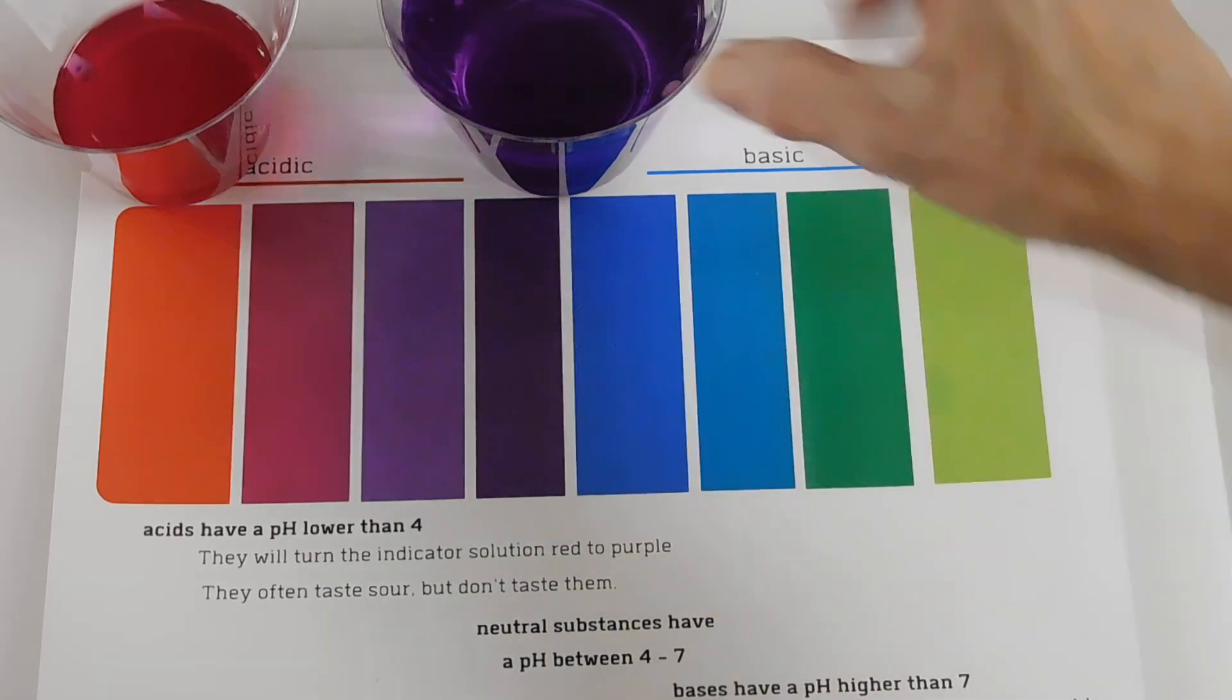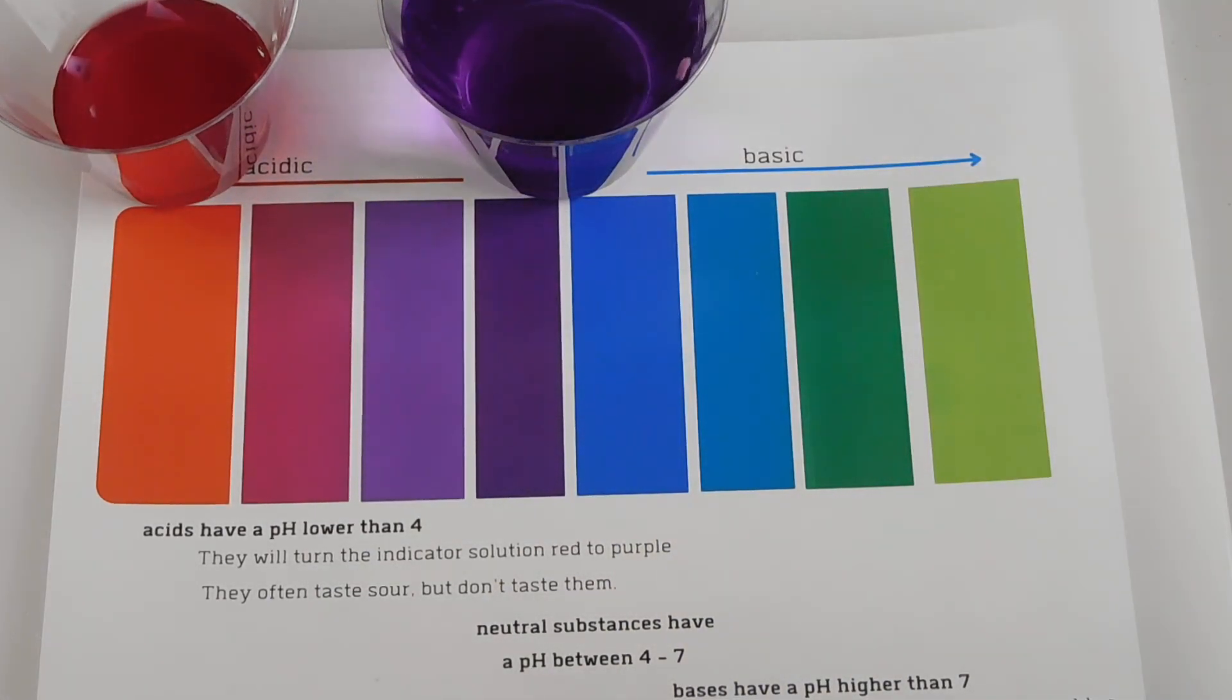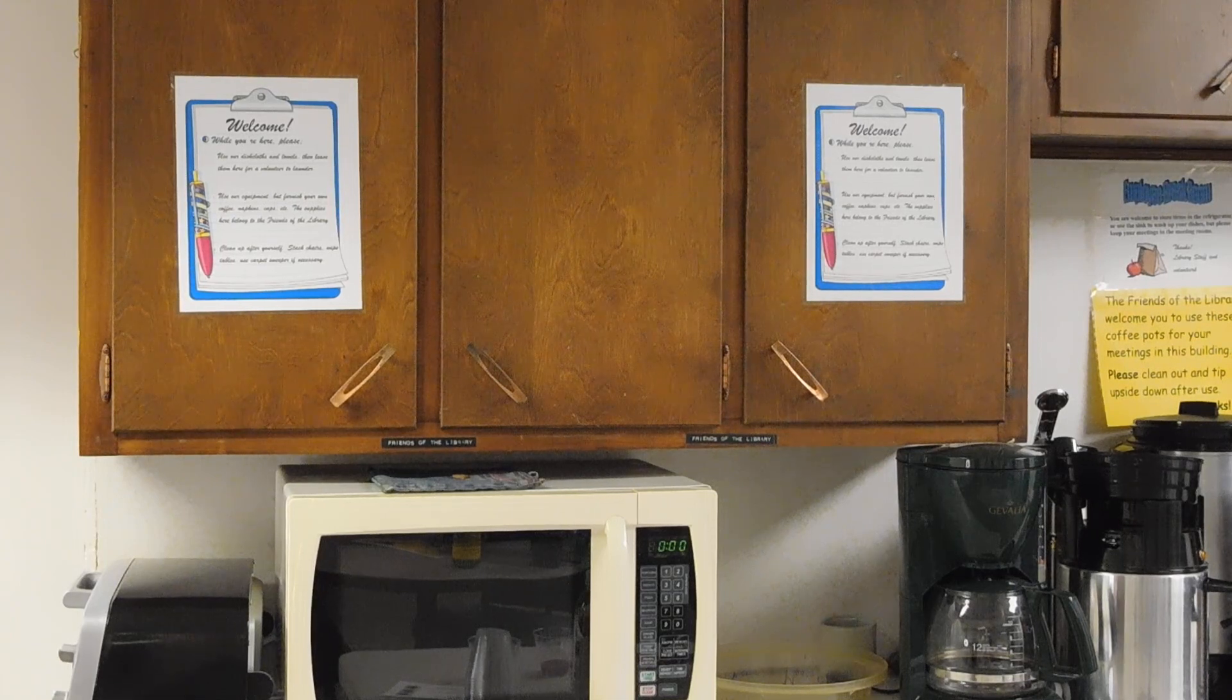So we use the base to neutralize the acid. So with the pH we had something that was an acid, we added something that was a base, and they neutralize each other and we end up with a neutral substance. So what did we discover today? We discovered that some substances are acids, some substances are bases, and some substances are neutral. We learned that we can take an acid, take a base, combine them, and they will work to neutralize one another.